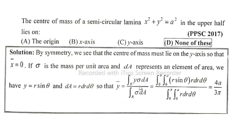integral of y σ dA divided by integral of σ dA, which equals integral from 0 to π, integral from 0 to a of r sin θ · r dr dθ divided by integral from 0 to π, integral from 0 to a of r dr dθ, equals 4a divided by 3π. So option D is correct, that is none of these.